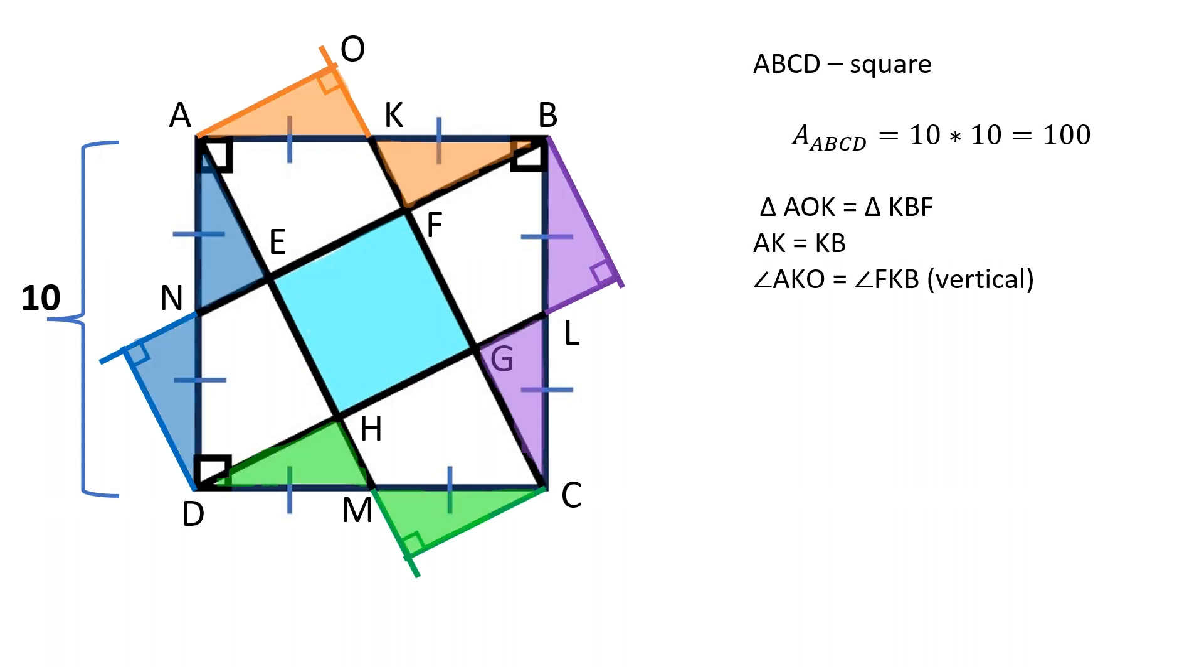Now let's prove that all five quadrilaterals are squares which are congruent. Let's represent the side lengths of the central square as X.